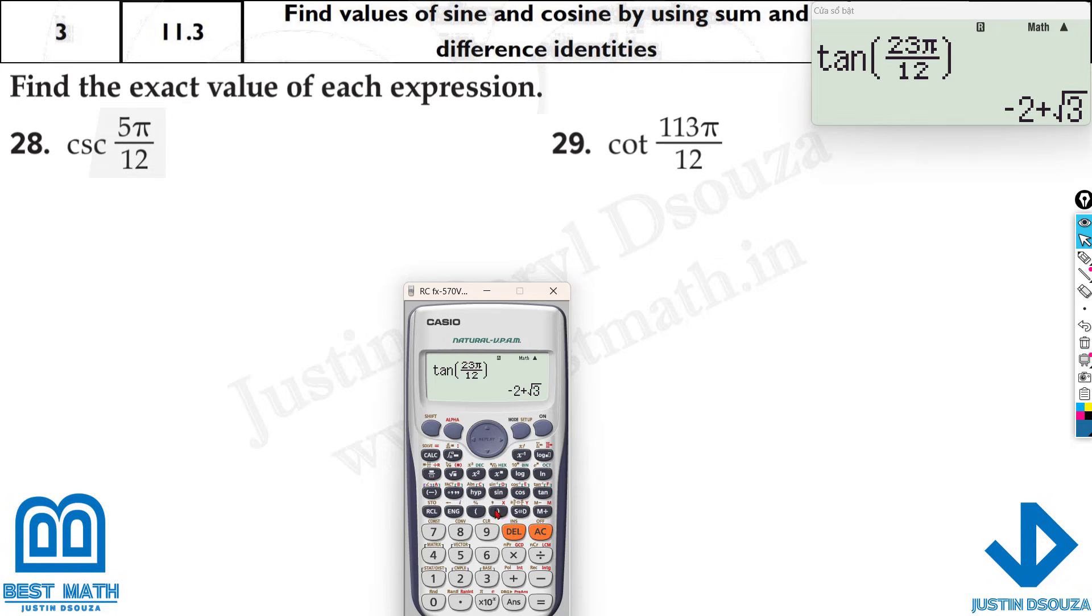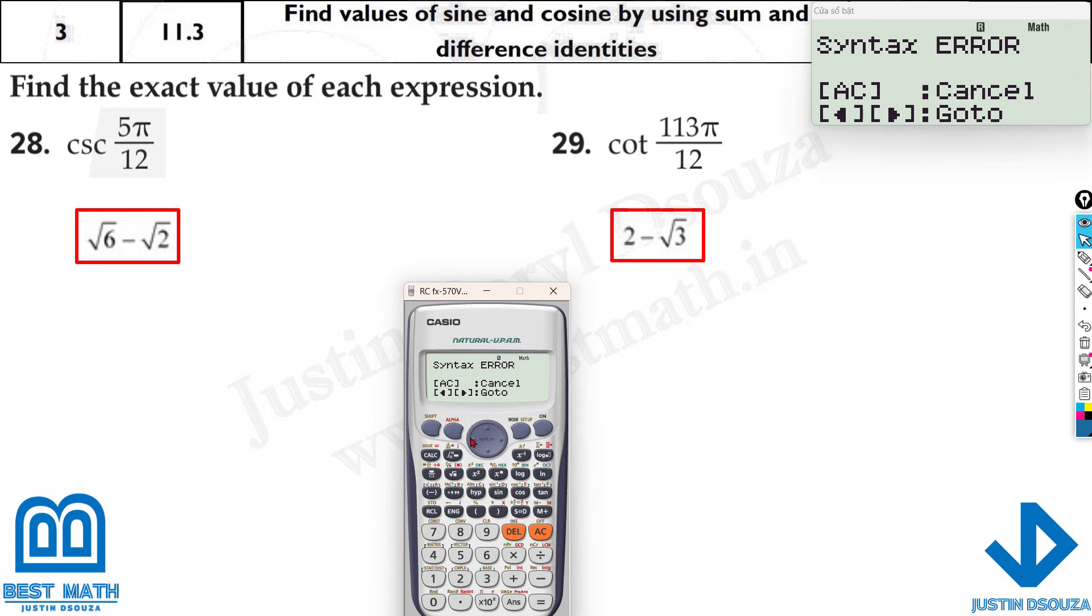Over here as well, it is cosecant. What is cosecant? It is 1 by sine. And then we have to write it as 5 pi by 12. And then close the bracket here. And it's in radian mode already. What about this one? It is cotangent. That is 1 by tan. And then we have 113 pi divided by 12. And now if you press equal to, you'll get an error. Because in this denominator, the brackets are very important. You have to close the bracket here. Otherwise, you get an error. Answer is 2 minus root 3.